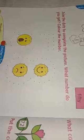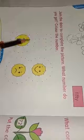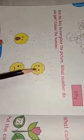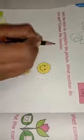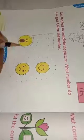Fill the color in this flower. Then join the dots to complete the picture. What number do we get? Color the number. Here we have some dots and we have to join the dots and complete the picture.